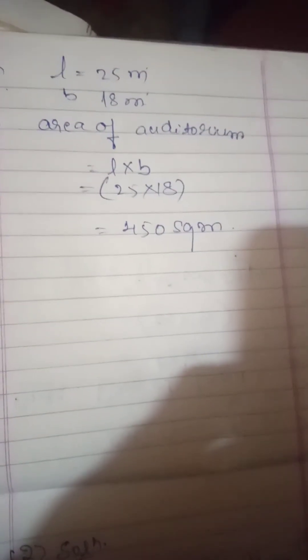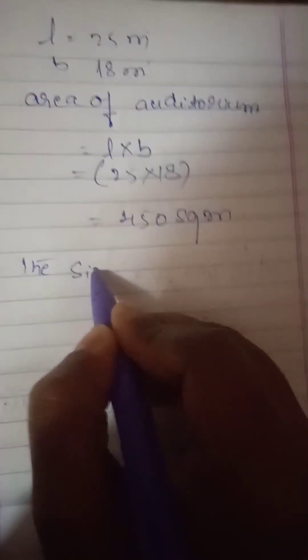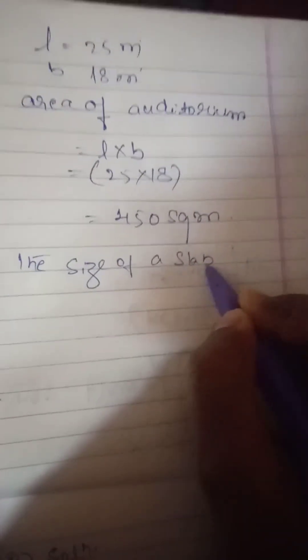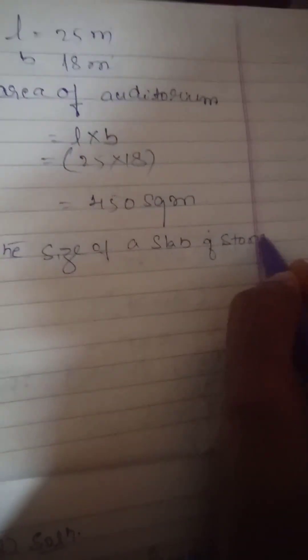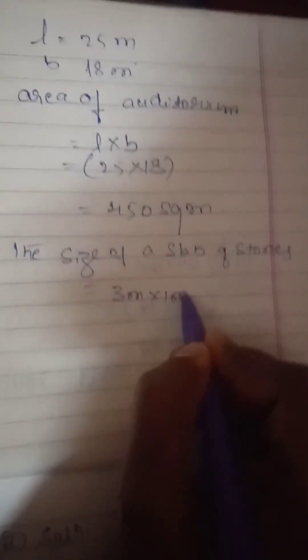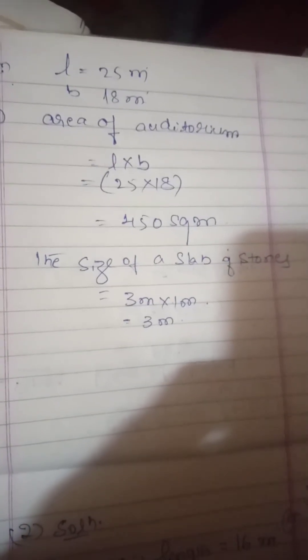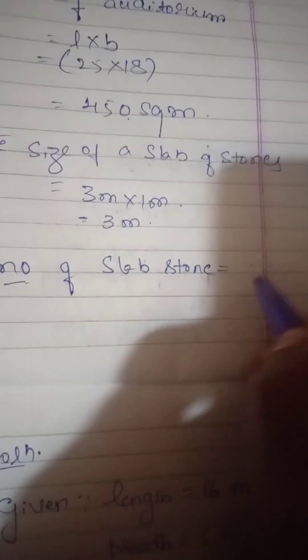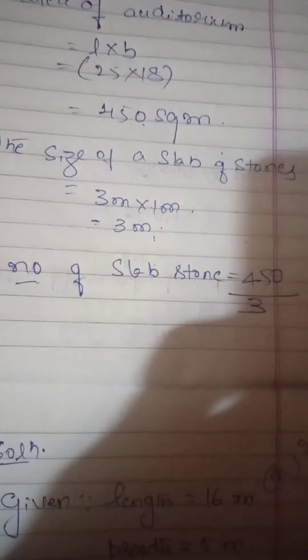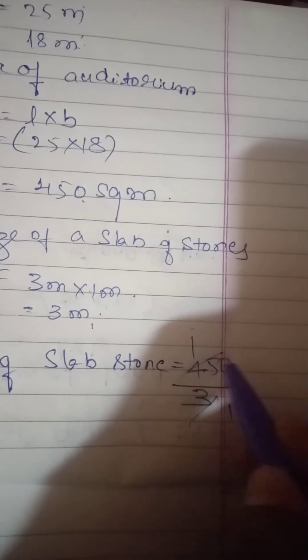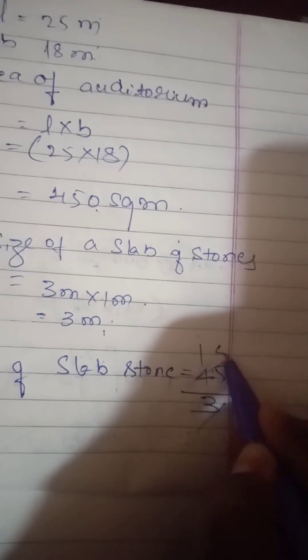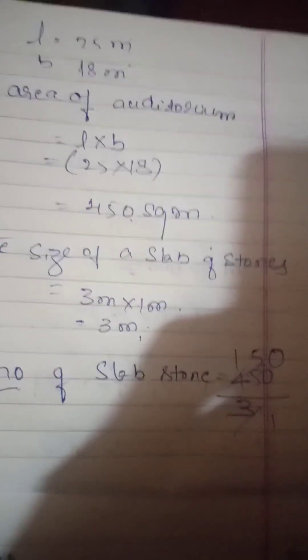The size of each slab stone is 3 meters into 1 meter, so the area of one slab is 3 square meters. Number of slab stones equals 450 divided by 3 equals 150. Therefore, 150 slab stones are required to cover the auditorium floor.